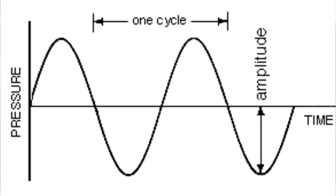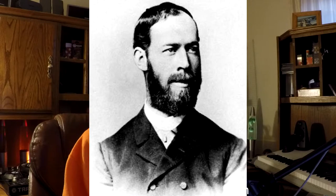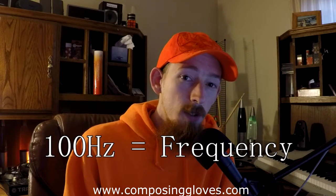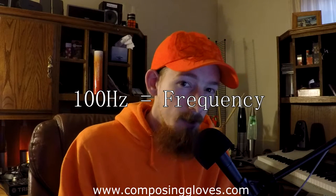We know that frequency is repetition. It can be measured and quantified. Things that vibrate have a frequency — a guitar string, a snare drum head, someone singing. These things move back and forth; they oscillate. They go through what's called a cycle, and the number of cycles per second is referred to as the frequency. We measure this value in Hertz, named after Heinrich Rudolf Hertz for his conclusive proof of electromagnetic waves. So if something has a value of 100 Hertz, it oscillates 100 times per second.